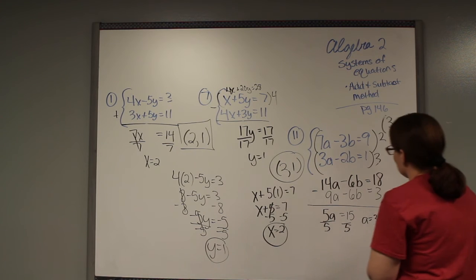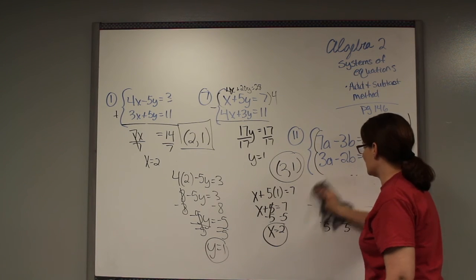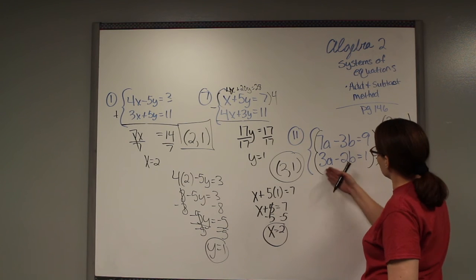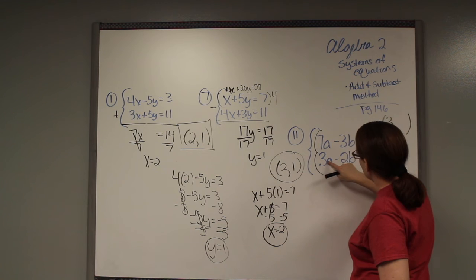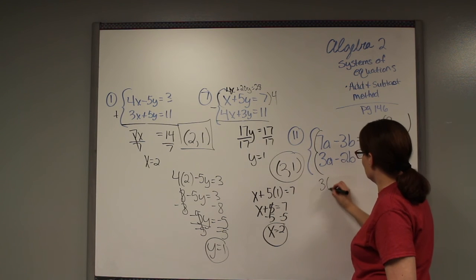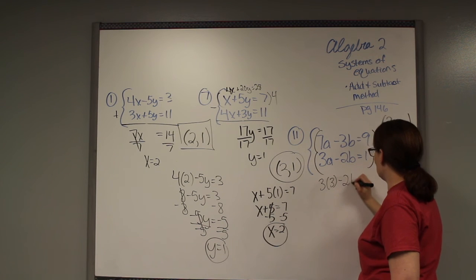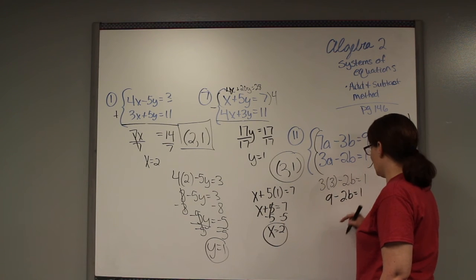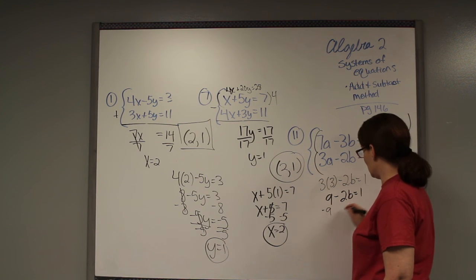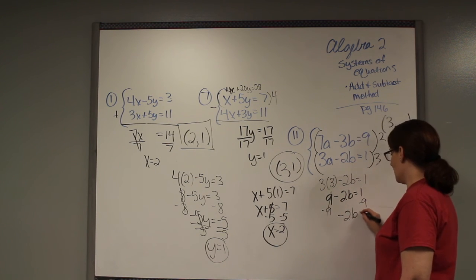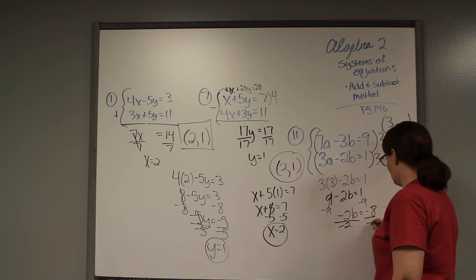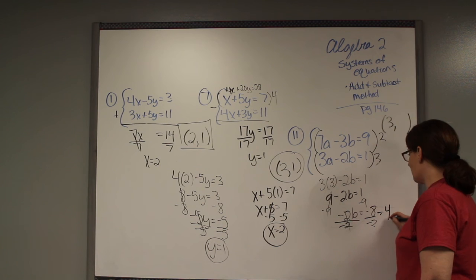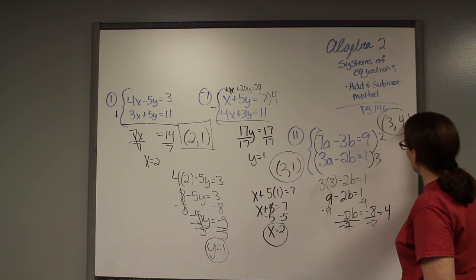Now I'm going to go back into one of the original equations. I won't use these, because if you messed up, it ain't going to help you. This time we'll pick the second one, and wherever there's an a, I will put a 3. So 3 times 3 minus 2b equals 1. 3 times 3 is 9 minus 2b equals 1. I'm going to move my 9 over, it was positive, so it's negative. Negative 2b equals negative 8. Divide by negative 2. Negative by negative is always a positive. 8 divided by 2 is going to be 4. So b will be 4.